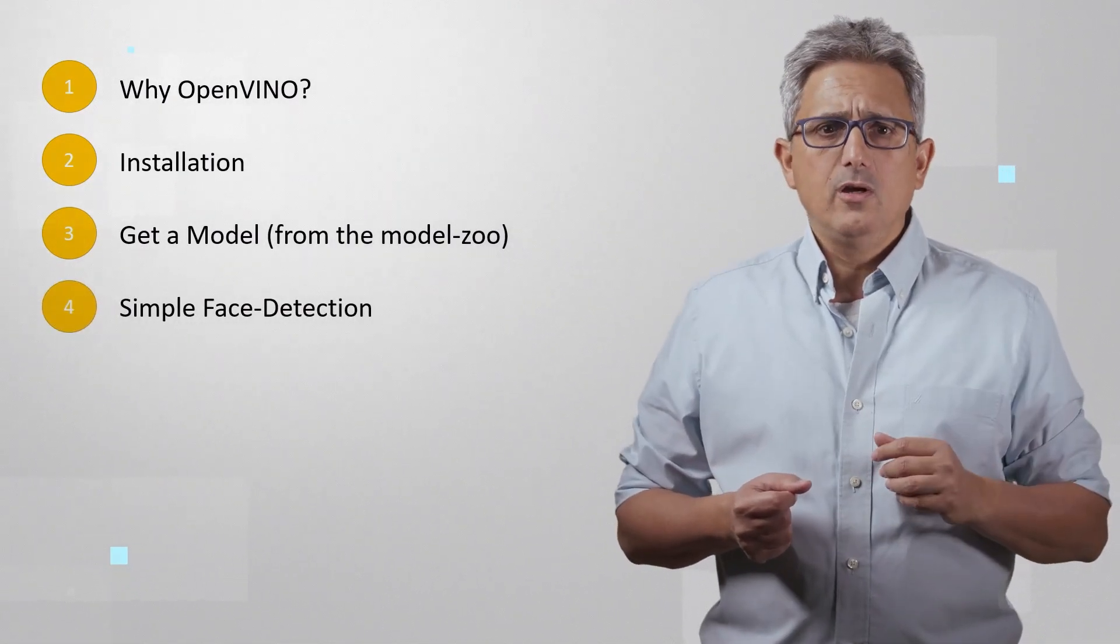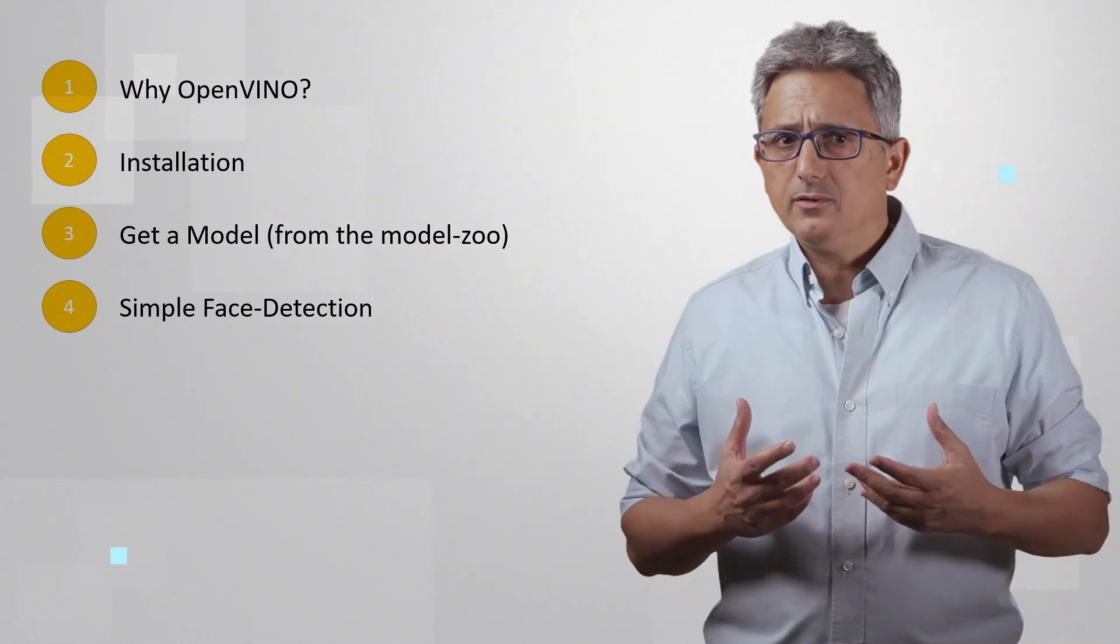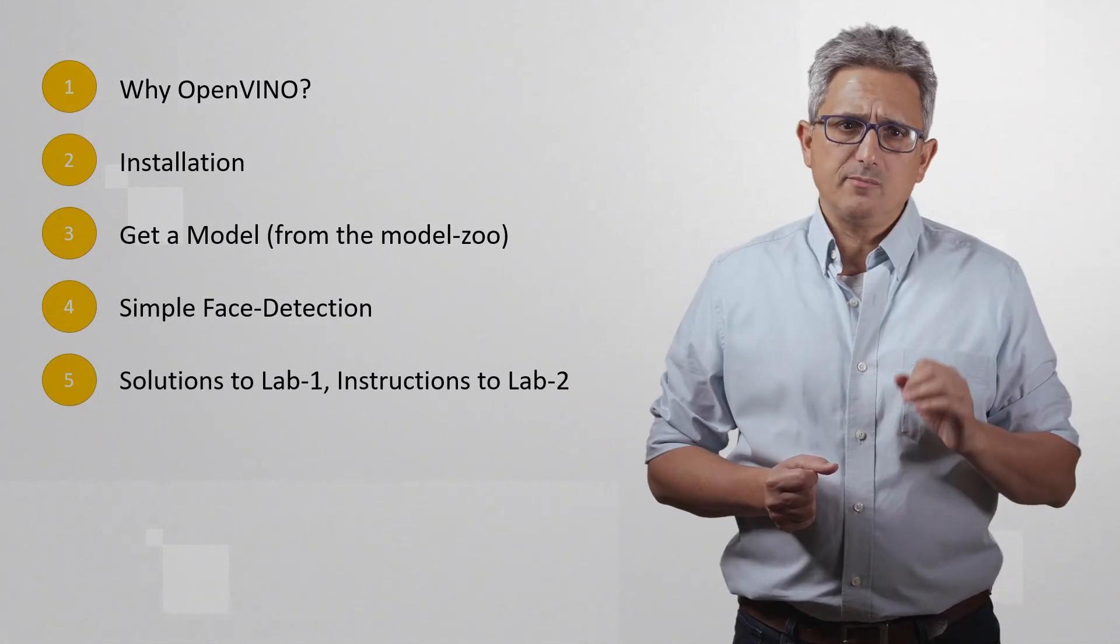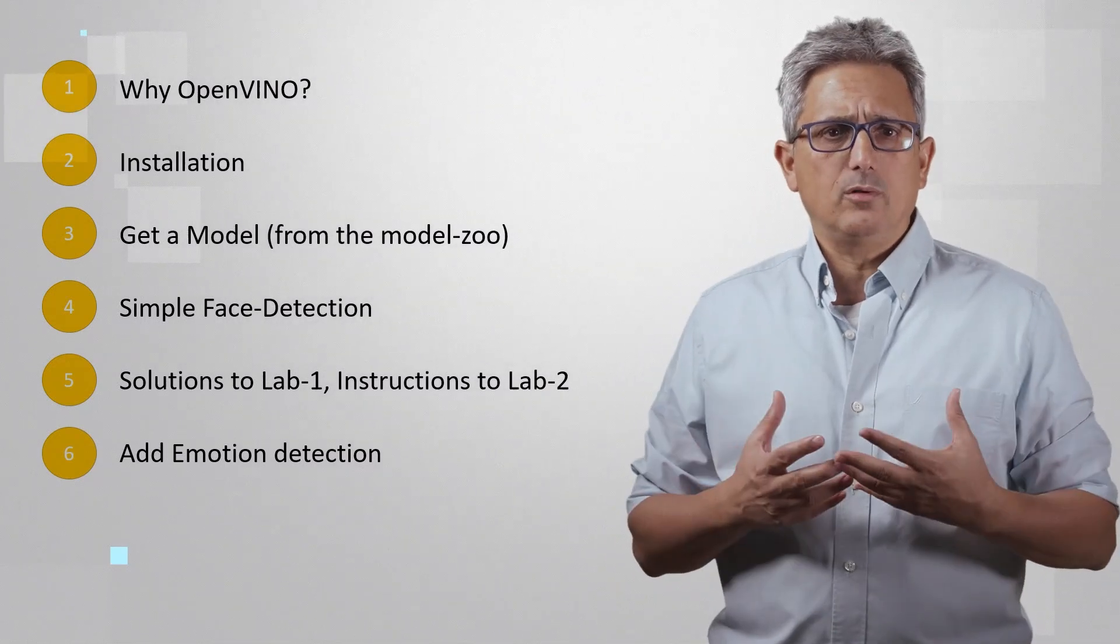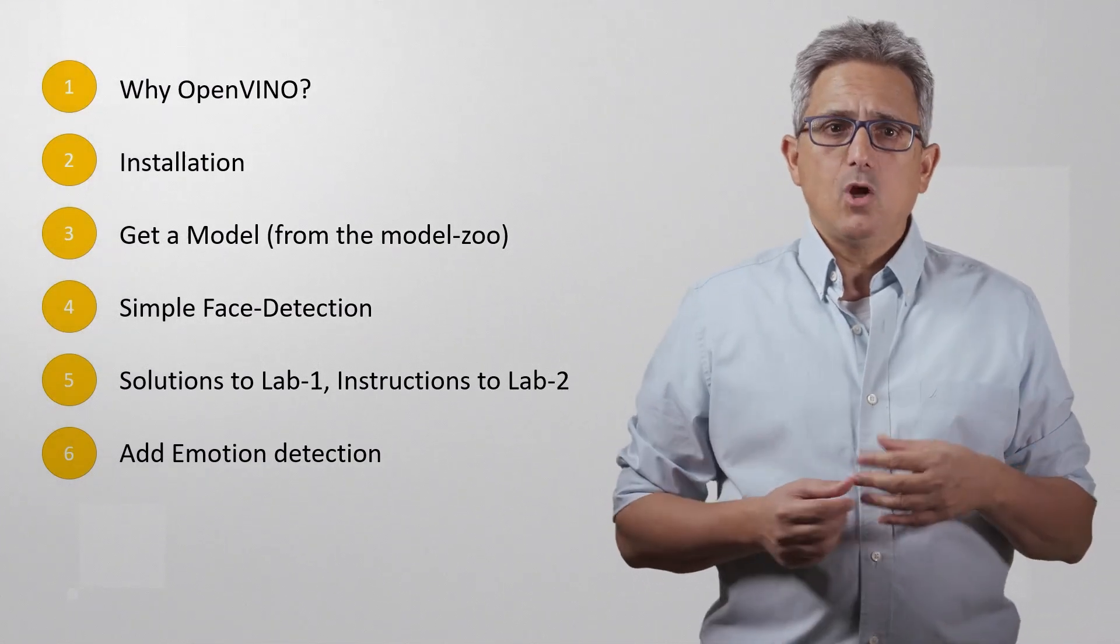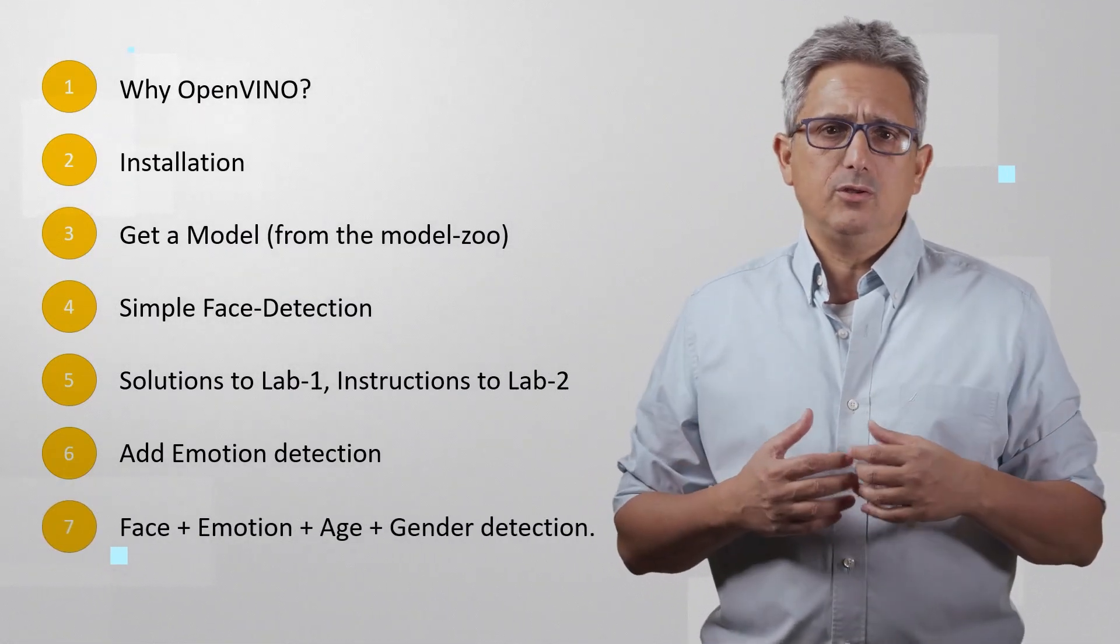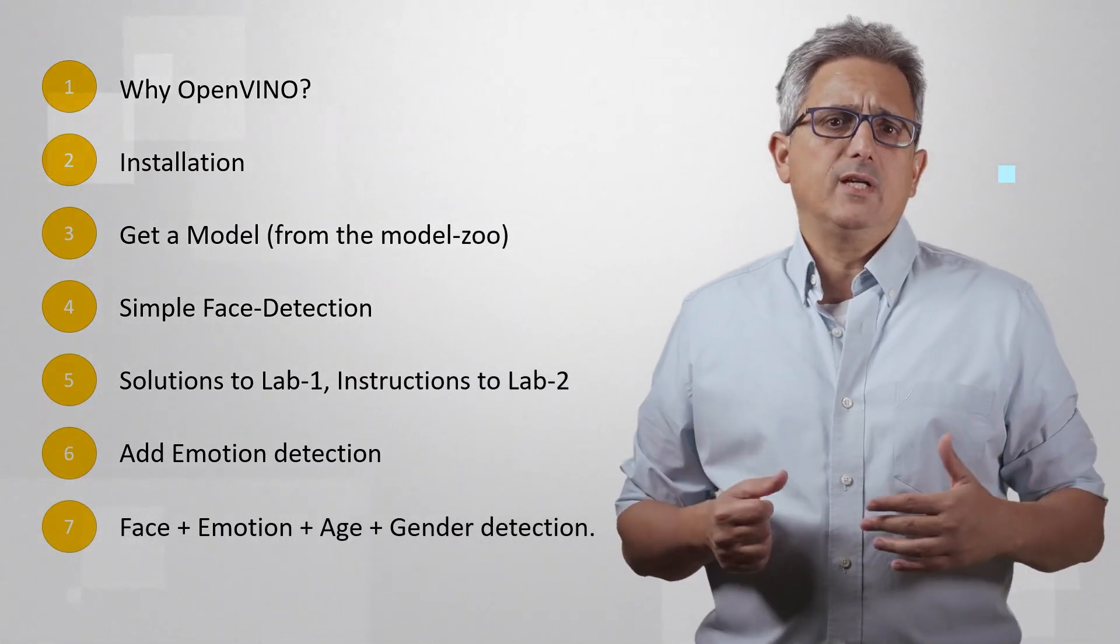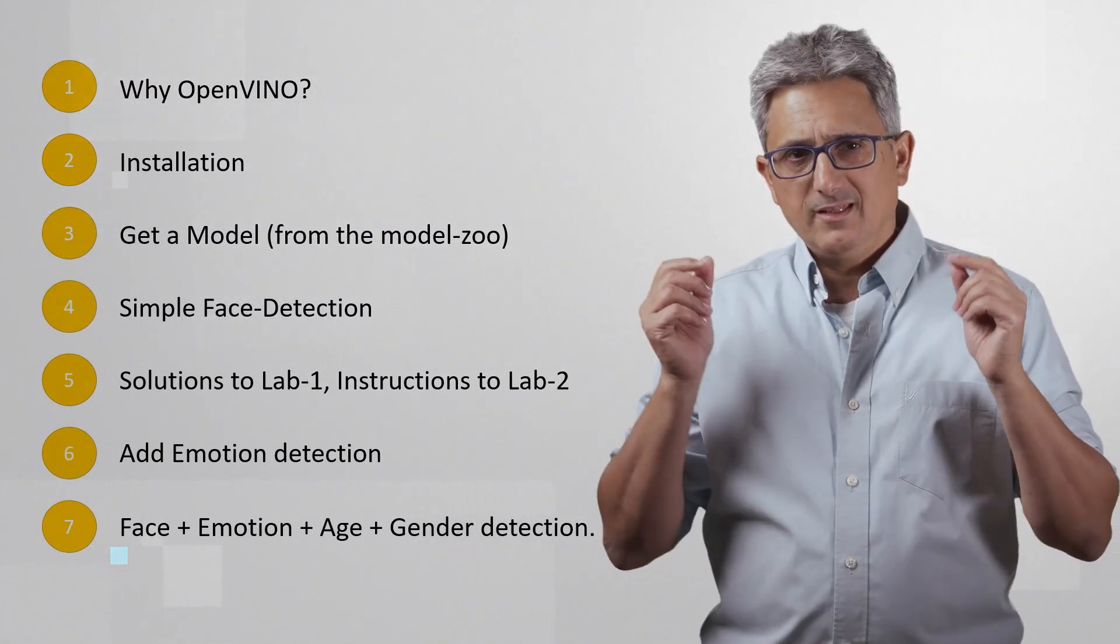In video number three we'll get a deep learning based model. In the fourth video we'll look at the simple face detection Python code using OpenVINO and you'll be able to practice it yourself. In the fifth video we'll take a look at the solution of the simple face detection application. In video number six I'll explain how to add another model to the application and we'll not only detect the face but also decide what is the emotion of this person and you'll have the opportunity to code it yourself. And in the last video, video number seven we'll review the emotion detection solution and see how to add more models to the application to detect age and gender. It's gonna be fun, let's begin.